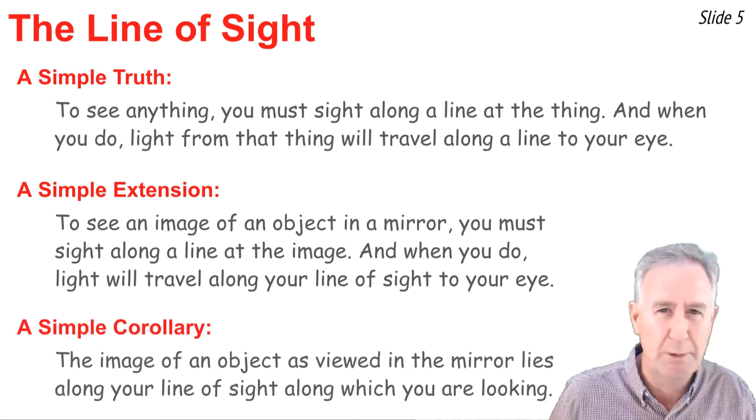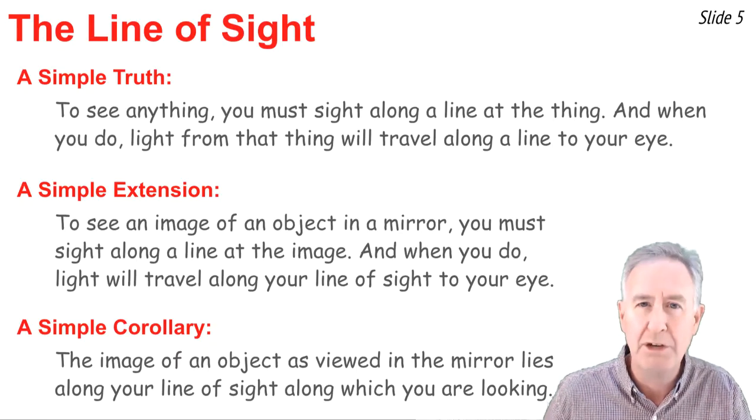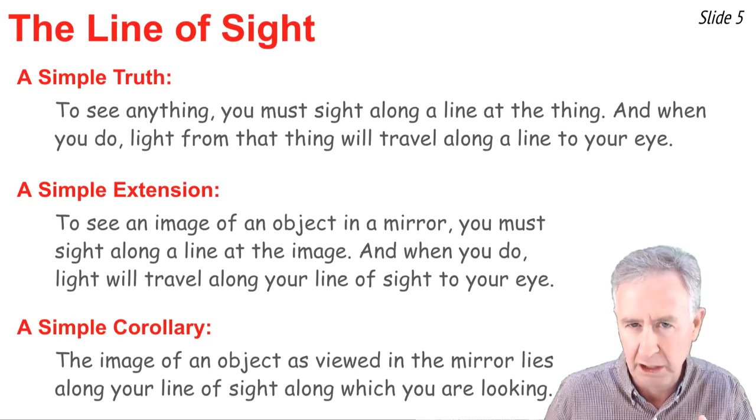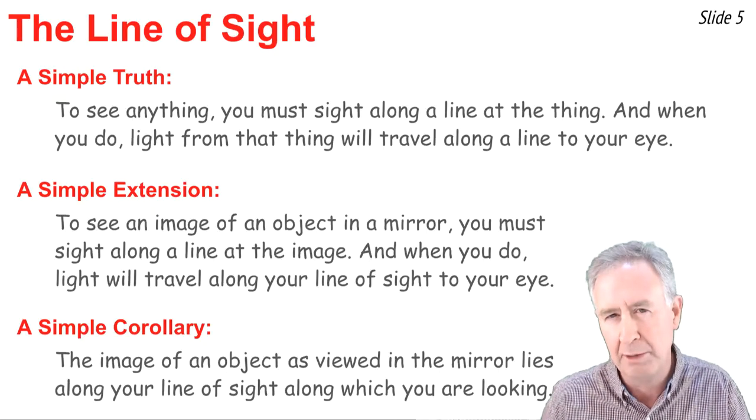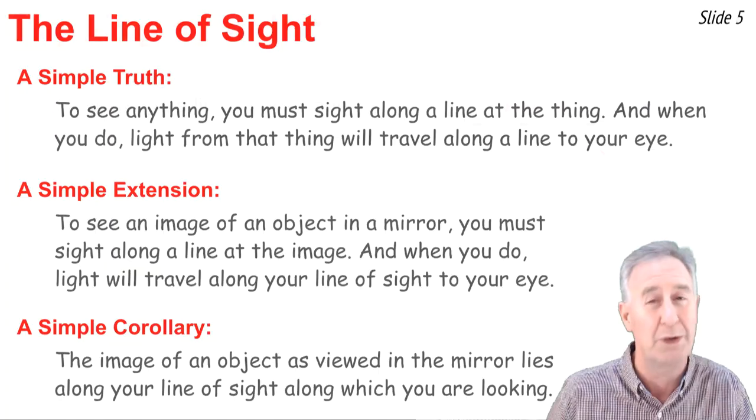And finally, there's a little follow-up corollary to this that's quite logical that goes like this. That the image of an object always lies along your line of sight as you're looking at it. So if you're seeing an image in a mirror, you know that the image lies along the line that you're looking at when you see it.